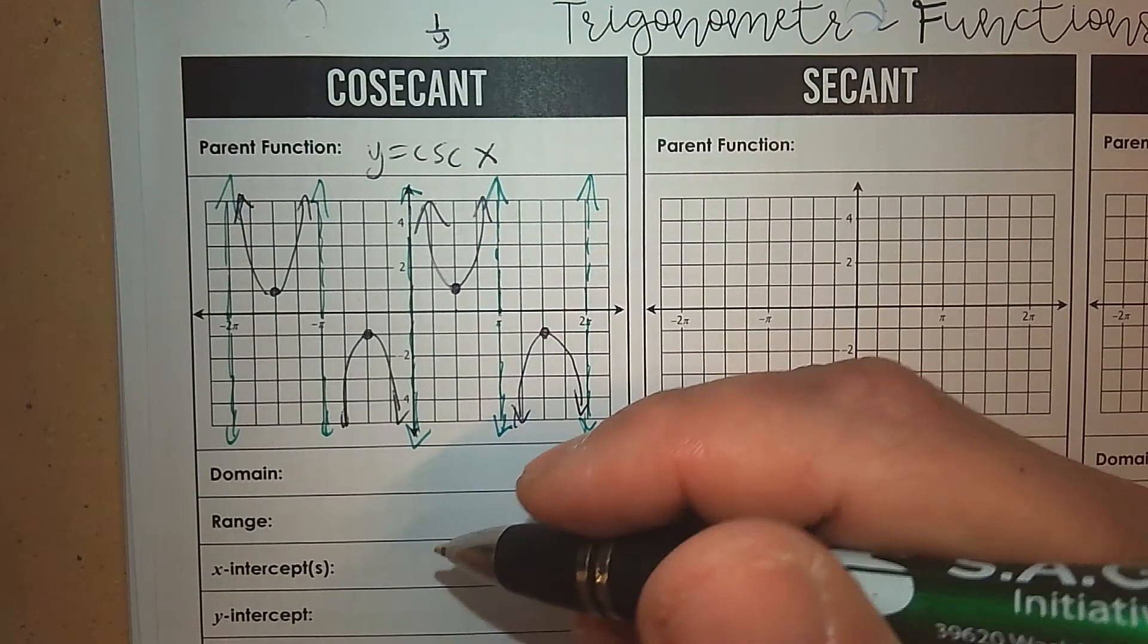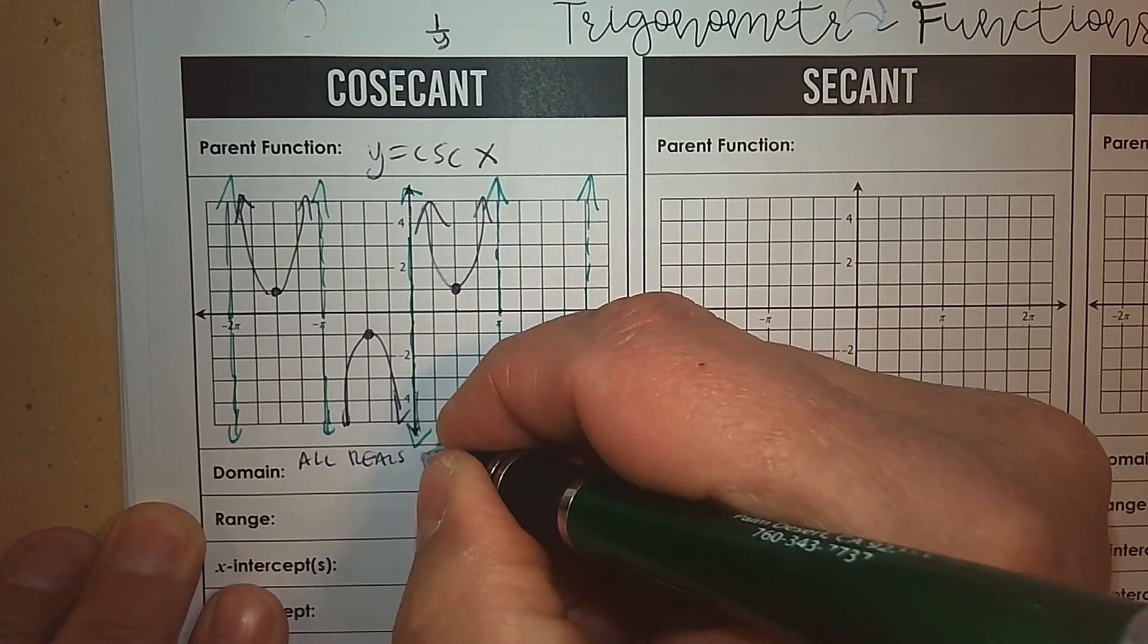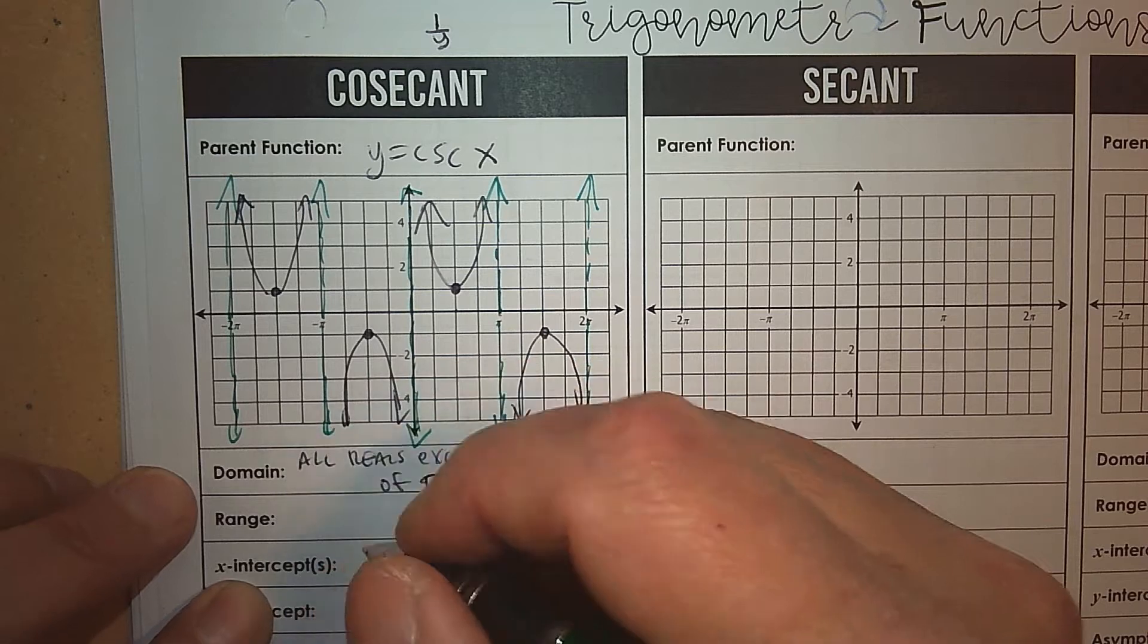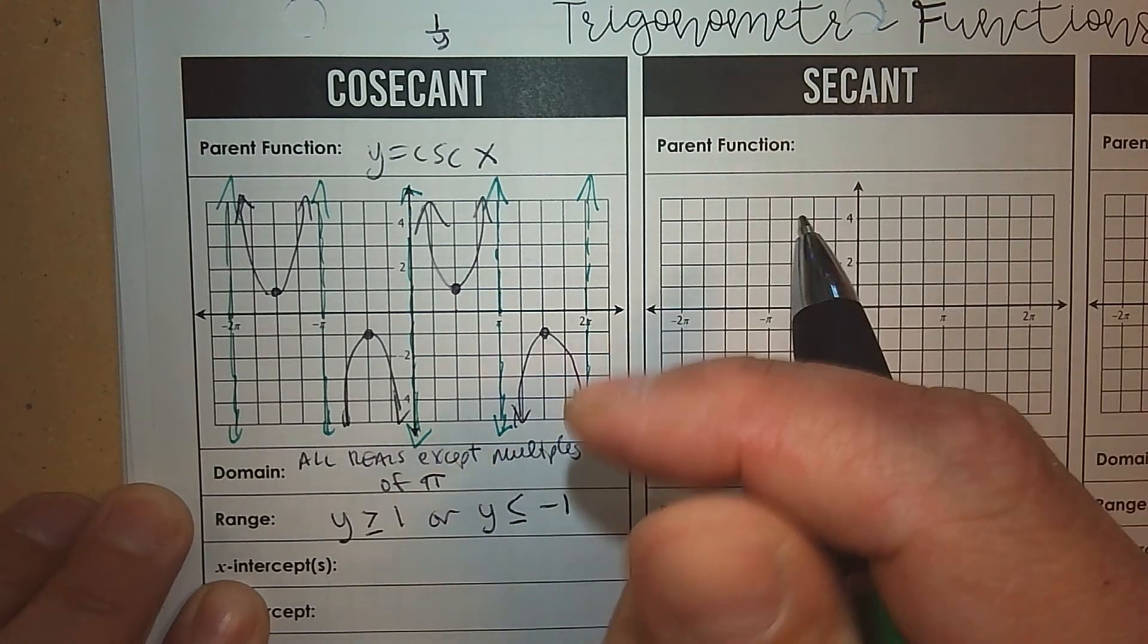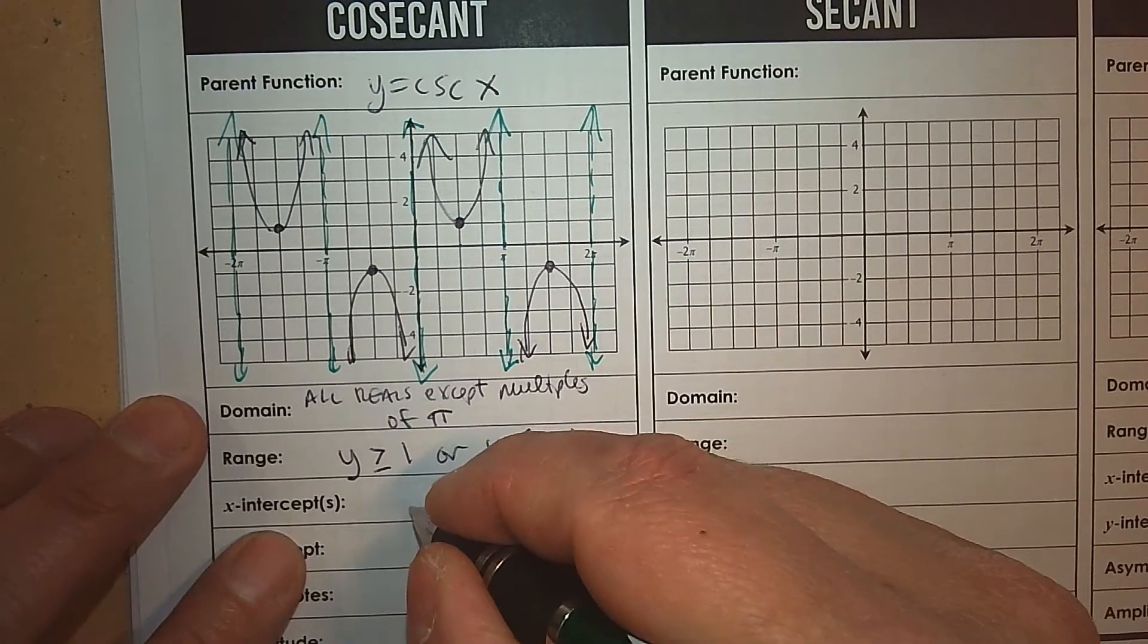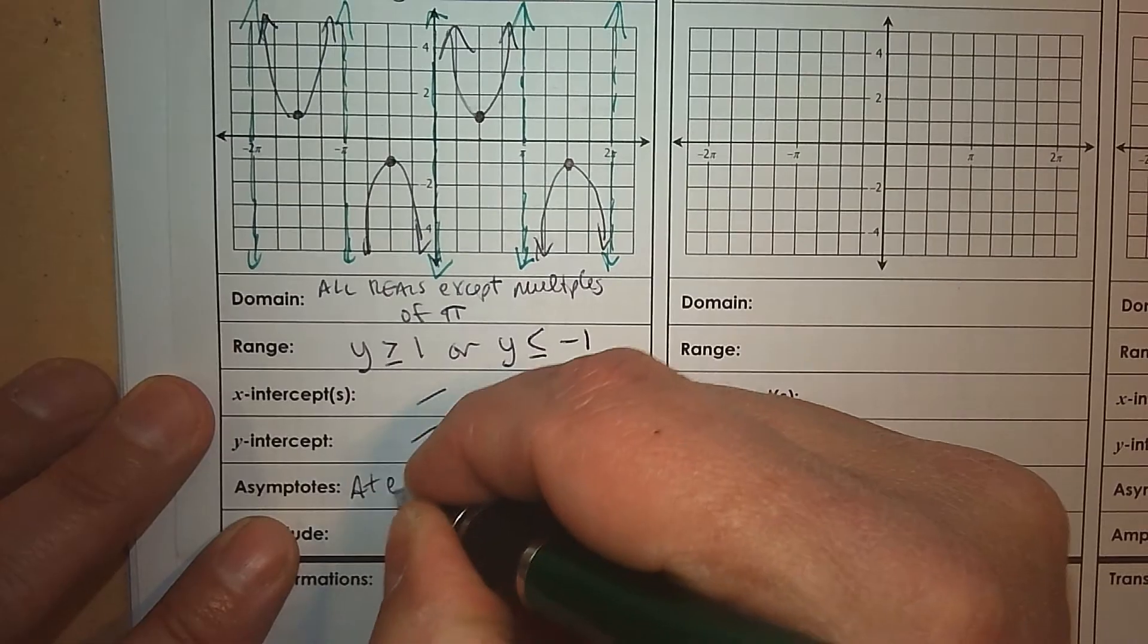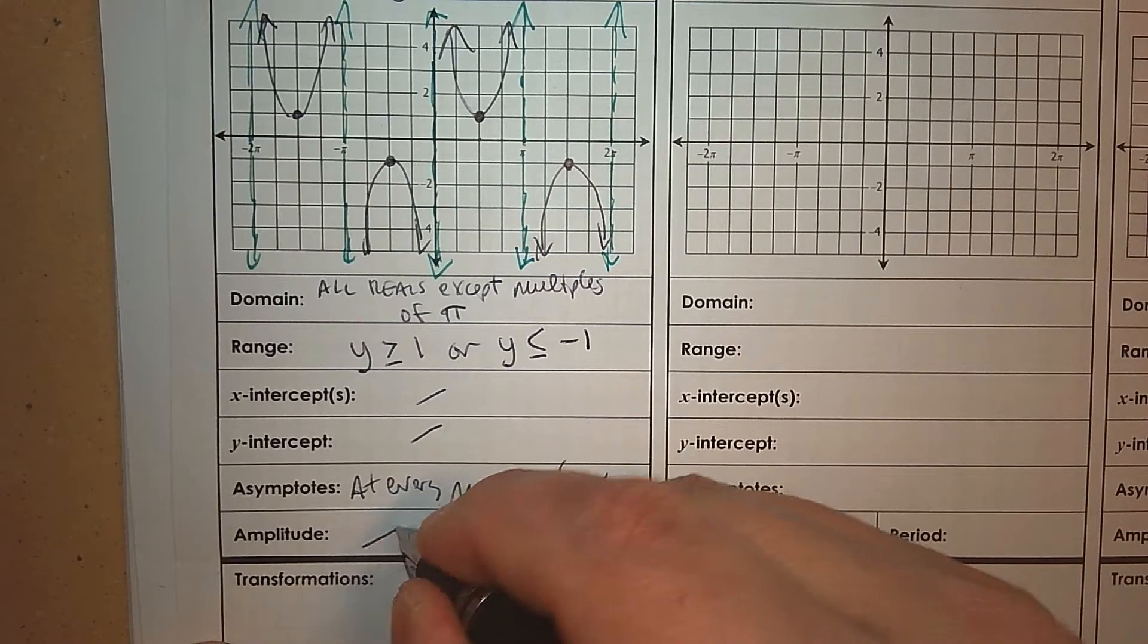The domain for this is all reals except multiples of pi. So every multiple of pi, there's an asymptote. The range, that's y, is greater than or equal to 1, or less than or equal to negative 1. So nothing between 1 and 0. There is no intercepts, because it doesn't touch the x-axis or the y, because there's an asymptote on the y. We have asymptotes at every multiple of pi. There is no amplitude, because it's not a wave. And the period is 2 pi.